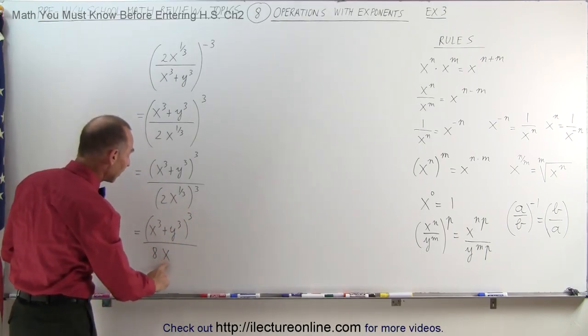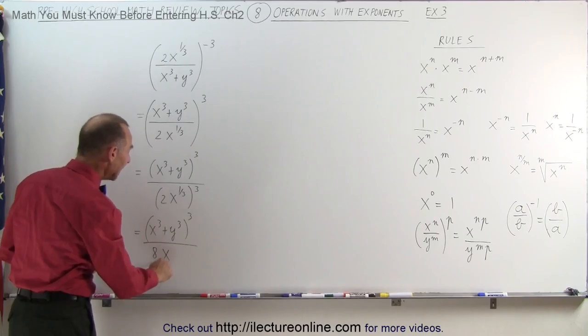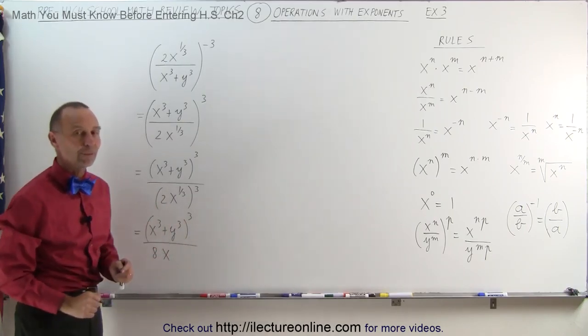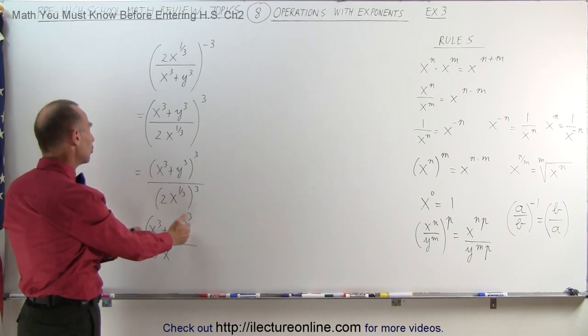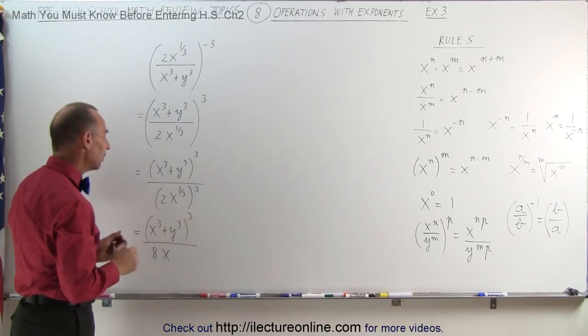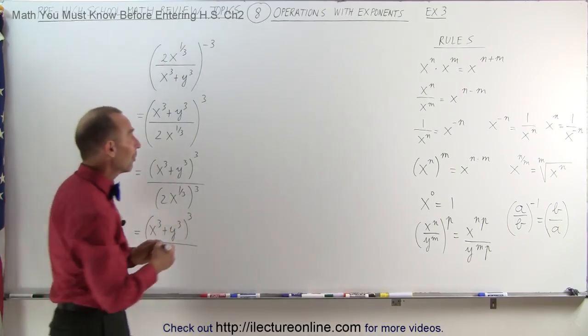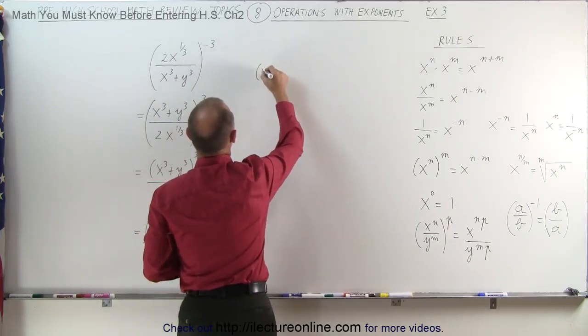Next there's a plus sign here. It's x cubed plus y cubed. So even if this exponent wasn't there, you still cannot divide x into there because the plus sign here means that you have to divide x both into the x cubed and into the y cubed, which you can't do.